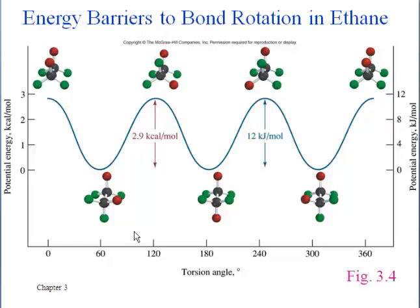The staggered conformations at the bottom are drawn as being low potential energy because they are more stable. This blue line is reminiscent of hills and valleys — just as a rock at the top of a hill has high potential energy and wants to roll down and settle at the bottom, so too do the conformations of ethane work that way.